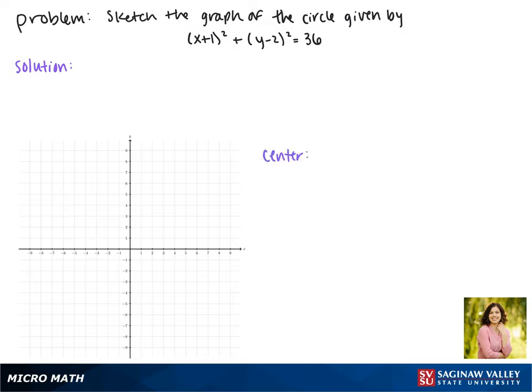Let's remember that the standard form of a circle is x minus h squared plus y minus k squared equals r squared, where the center of our circle is the point h, k. That makes the center of our circle here the point negative 1, positive 2.